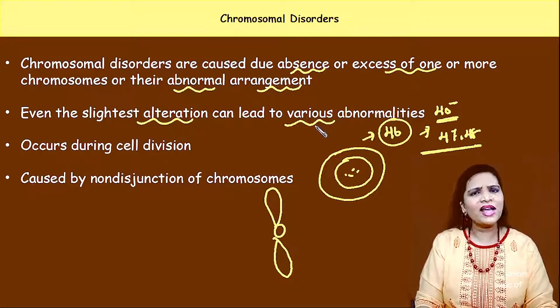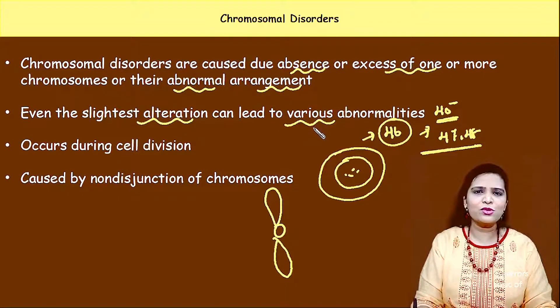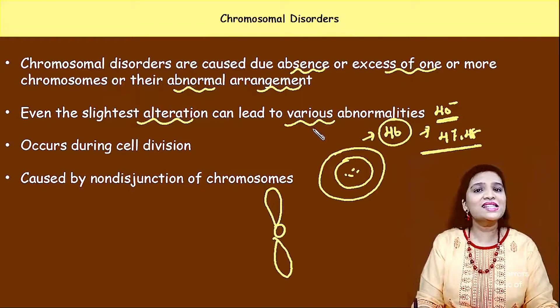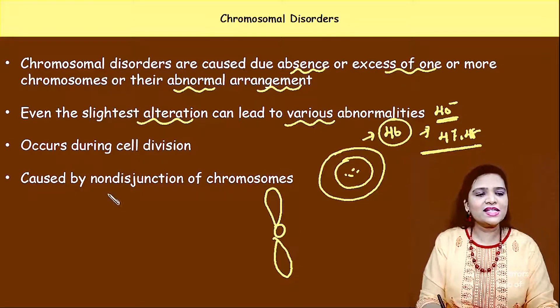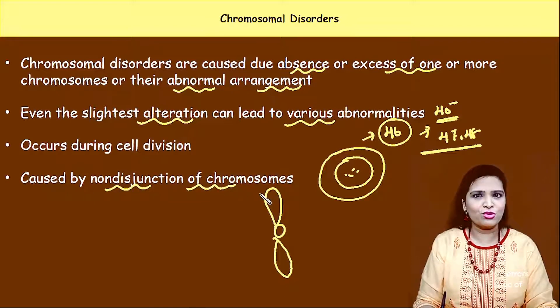Why does this occur? All these chromosomal abnormalities occur during cell division. This is due to something called non-disjunction of chromosomes.